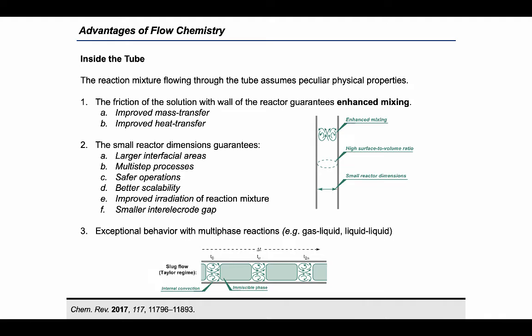In the context of photochemistry, the small reactor provides an improved and more homogeneous irradiation of the reaction mixture, while from an electrochemical standpoint, the small inter-electrode gap generates a more selective and reproducible system. These features are uniquely expressed when multiphasic reactions are employed too.